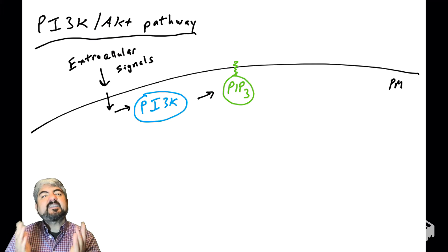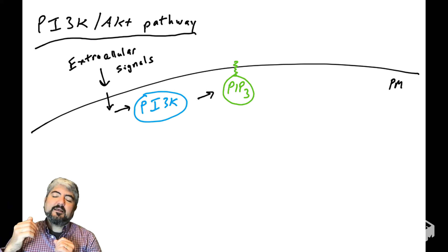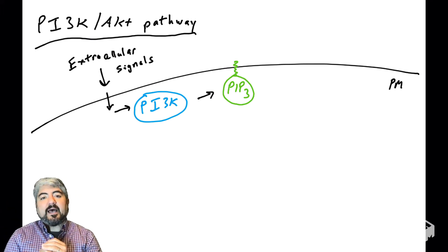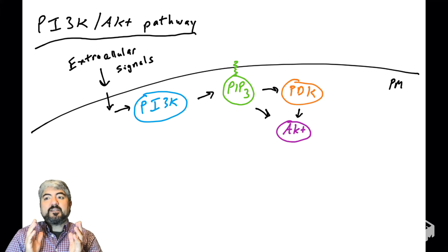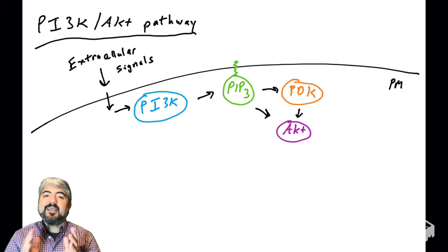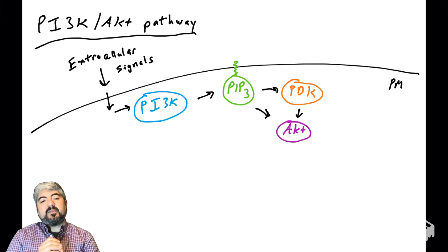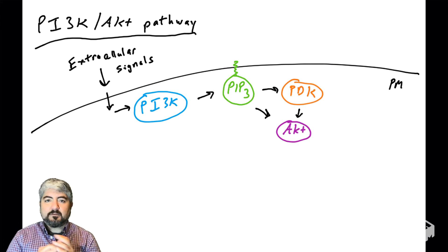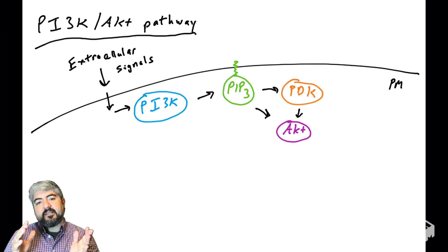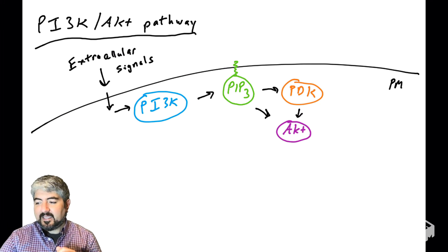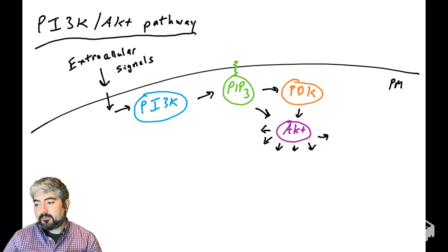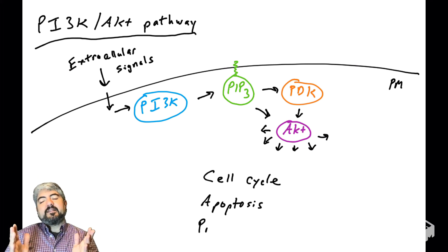PIP3 is a signaling molecule, so it's going to help send a signal into the cell from the cytoplasmic side of the plasma membrane, and that signal is going to be transmitted to proteins. Two proteins that we're going to talk about are PDK and AKT — these are also kinases. Kinases are extremely important signaling and regulatory molecules. Once these signals reach AKT, AKT has many substrates, and when it phosphorylates those substrates, it regulates their function.